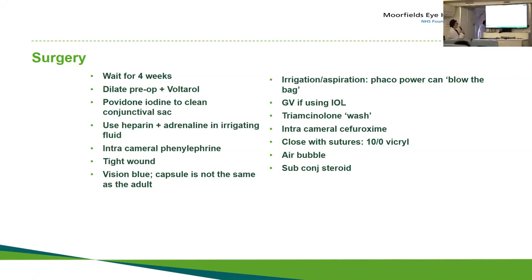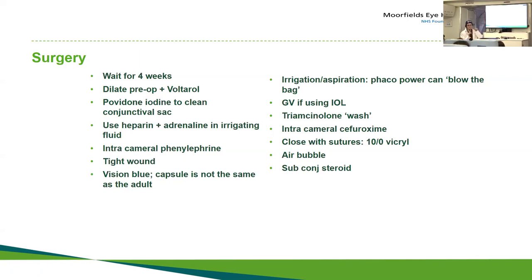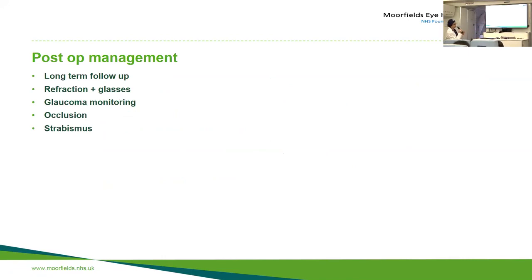I use intracameral cefuroxime at the end of surgery and 10-0 Vicryl sutures. I put an air bubble in at the end of congenital cataract surgery because children have a very shallow anterior chamber, and you must prevent the iris touching the corneal endothelium — otherwise you risk aphakic glaucoma. You can use Healon GV but the pressure may rise to 50 and you have to sit it out for three to five days, then give subconjunctival steroid at the end.